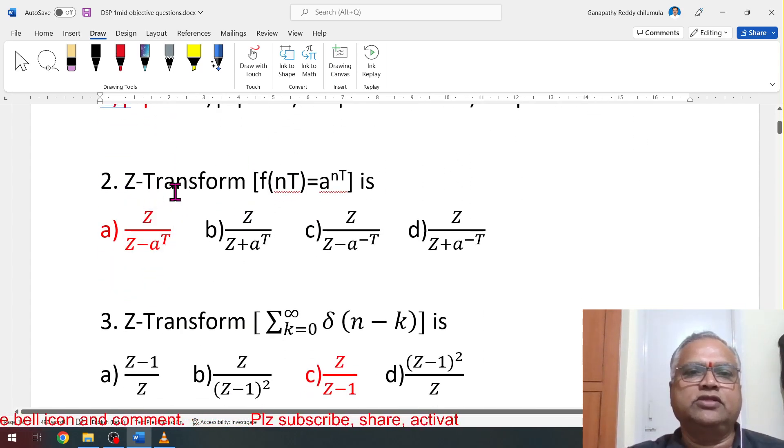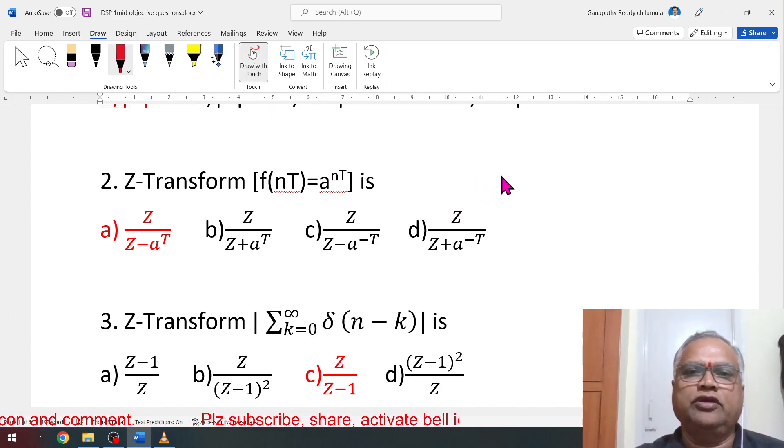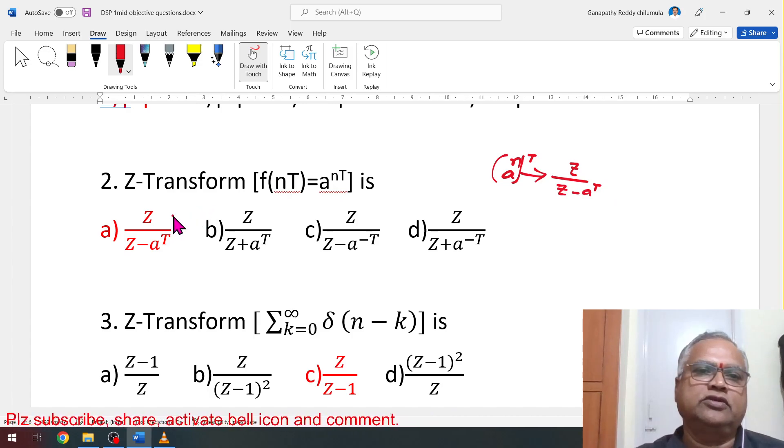Second question: Z-transform of f(n)t equal to a^(nt) is, if it is only a^n, what is the Z-transform is Z/(Z-a). But here a^(nt) is also there, therefore you get x*(t). That is why this is correct.